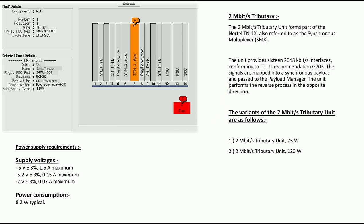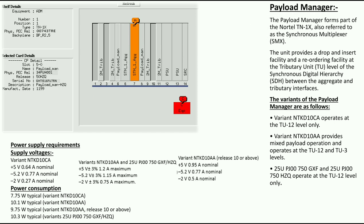The next slot is Slot 5, which is for the payload manager. The payload manager provides a drop-and-insert facility and a re-ordering facility at the tributary unit level of the synchronous digital hierarchy between the aggregator and the tributary interfaces. There are two variants available for the payload manager.